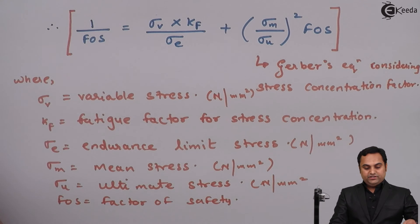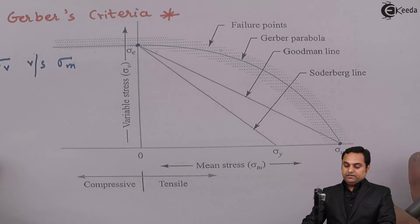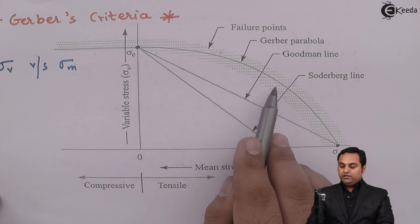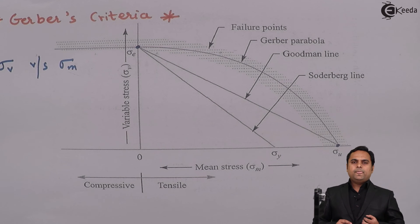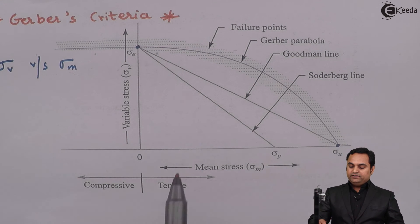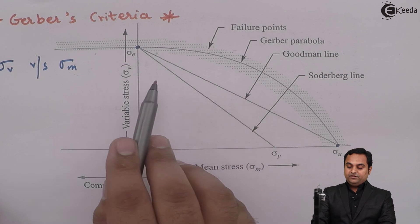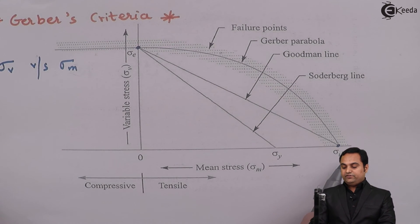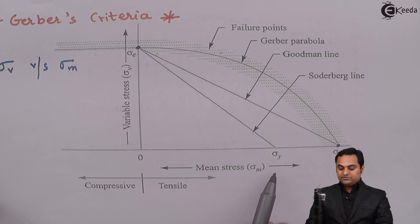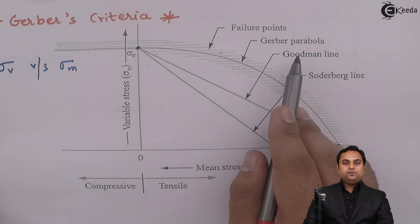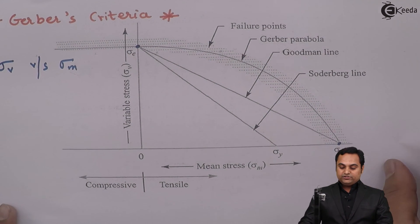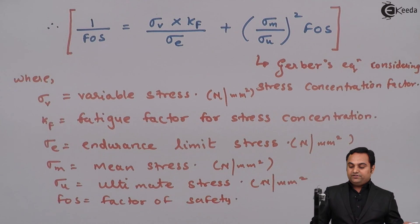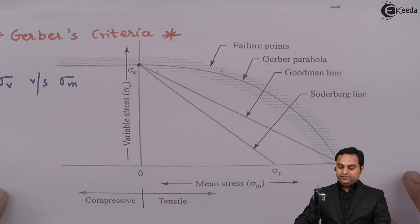To summarize, Gerber's criteria is a parabola where points closer to it represent failure points — objects subjected to loading that have failed. Simplifying the parabola gives two straight lines: the Goodman line, which considers ultimate stress, and the Soderbergh line, which considers yield stress. We have seen two equations — one neglecting the stress concentration factor and one considering it — completing this concept.